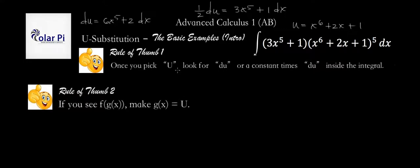Second rule of thumb concerns finding a composition of two functions inside our integral. So if we see f of g of x inside our integral then we should make g of x our u is what the second rule of thumb says.